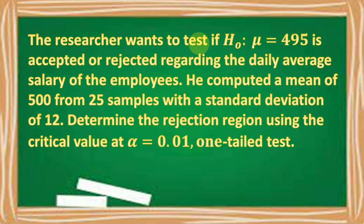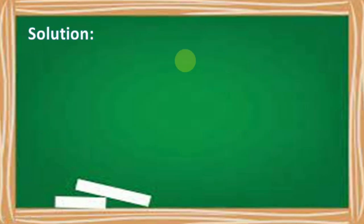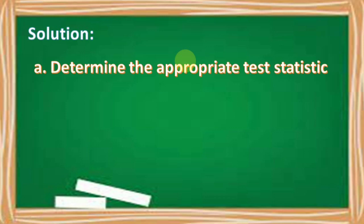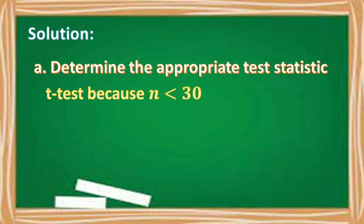Let's have another example. The researcher wants to test if the null hypothesis where mu is equal to 495 is accepted or rejected regarding the daily average salary of the employees. He computed a mean of 500 from 25 samples with a standard deviation of 12. Determine the rejection region using the critical value at a significance level of 0.01 and a one-tailed test. The test statistic is a T-test because our sample size n is less than 30.